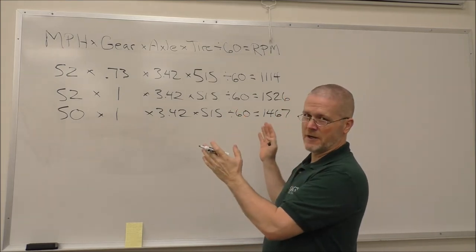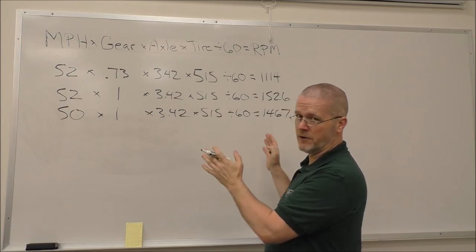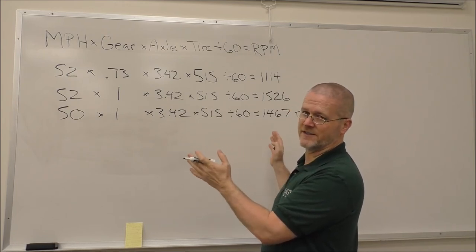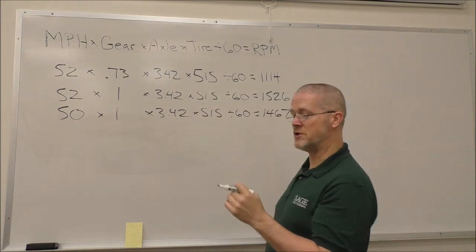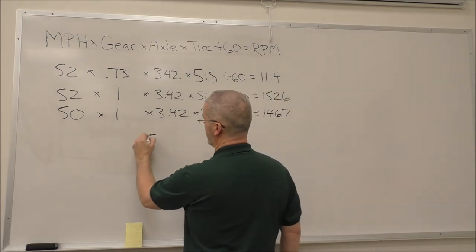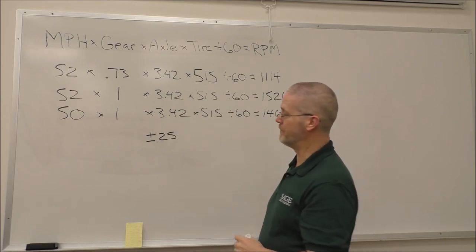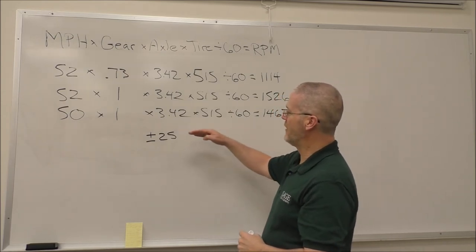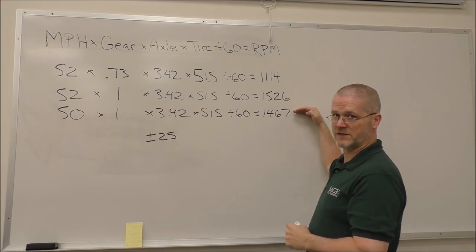When you go to change a gear, do you have to be perfect with the RPM? No, you don't have to be perfect, and that's good because that's impossible. A human being is not going to get this number exactly right. But you do have to be close enough, and for our purposes, close enough is going to be plus or minus about 25 RPM. If you can get within 25 of this 1467, you're probably going to be able to slip into that ninth gear position and go on about your business.